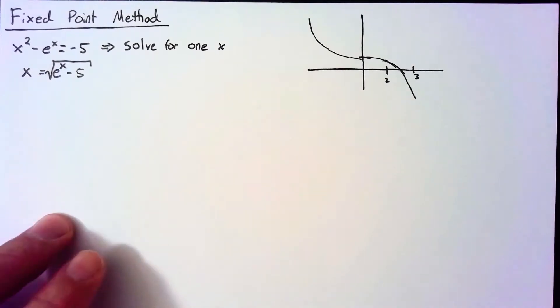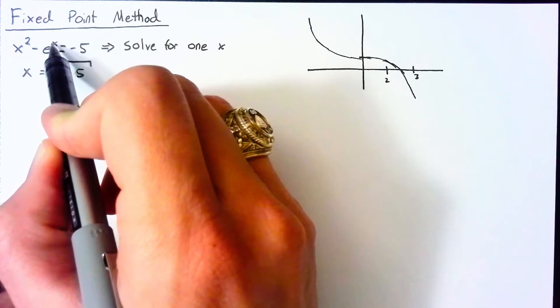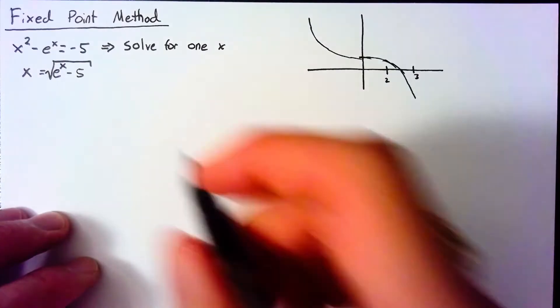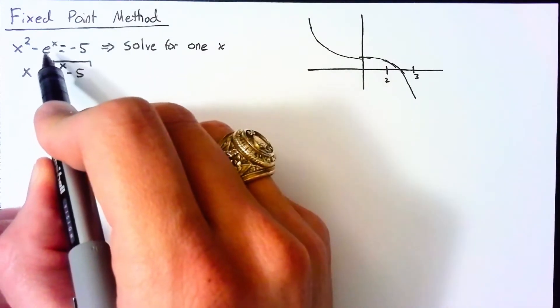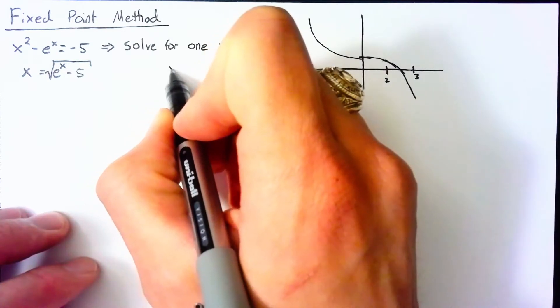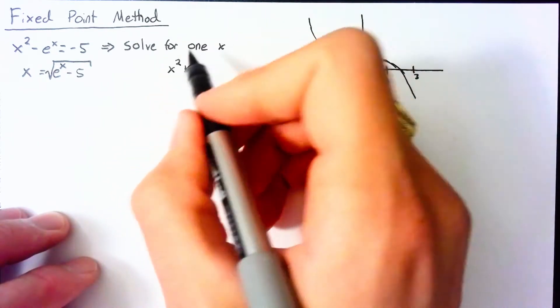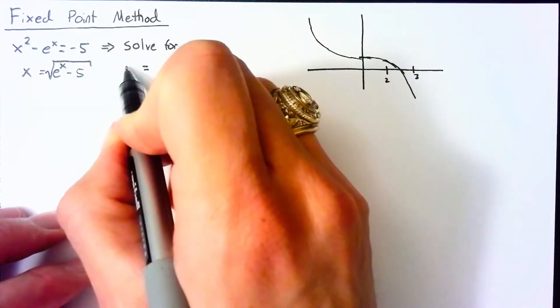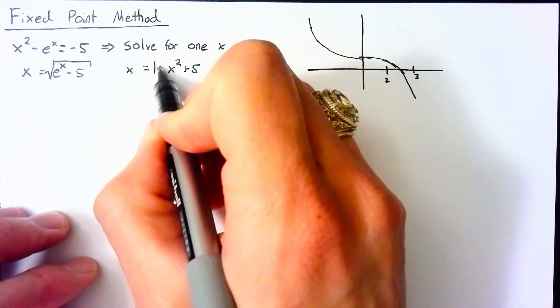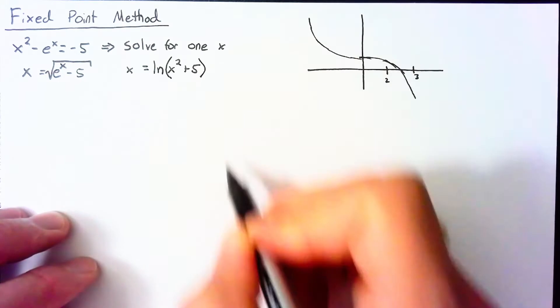Now I can also solve for the x in the e^x. So doing that, I end up with e^x = x² + 5. So if I want to isolate the x there, then I end up with a natural log of x² + 5.